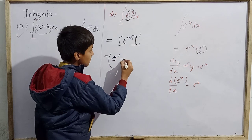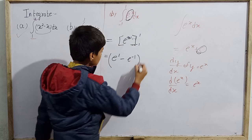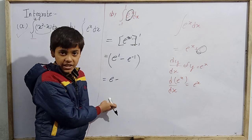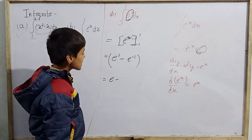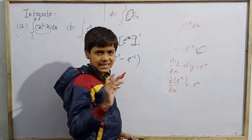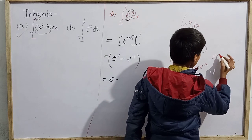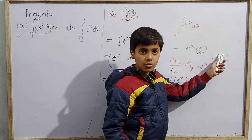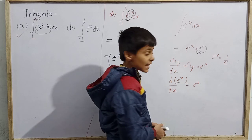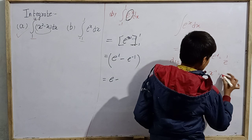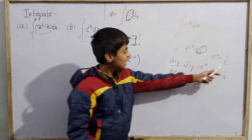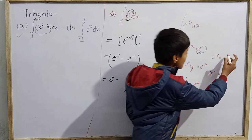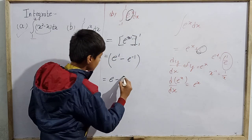Putting in the values: x = 1 gives e^1, minus x = -1 gives e^(-1). This is e¹ minus e^(-1). Now e^1 is simply e, and e^(-1) equals 1/e, because x^(-1) = 1/x — that is the reciprocal or multiplicative inverse.